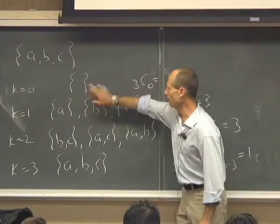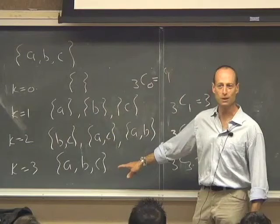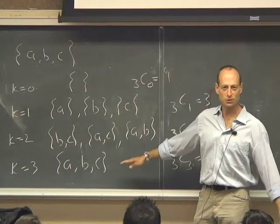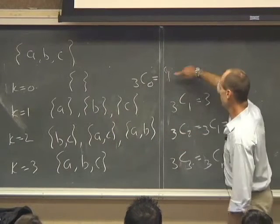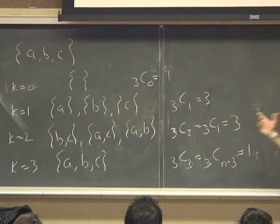So indeed, we have counting through all eight subsets: 2 cubed equals 8 possible subsets. So 3 choose 0 plus 3 choose 1 plus 3 choose 2 plus 3 choose 3 is equal to 8.